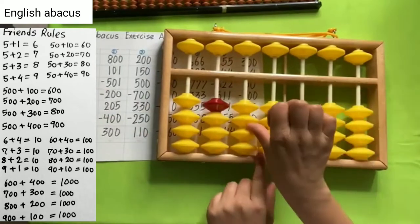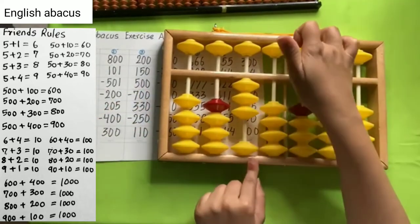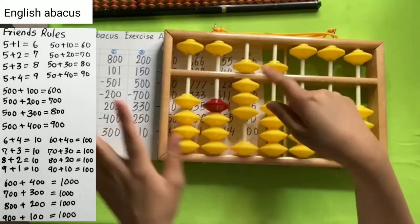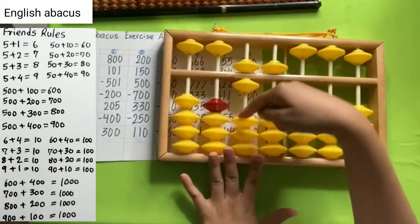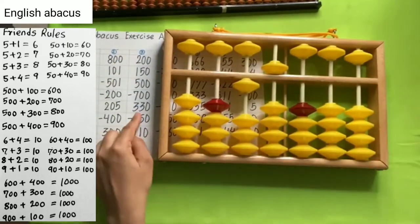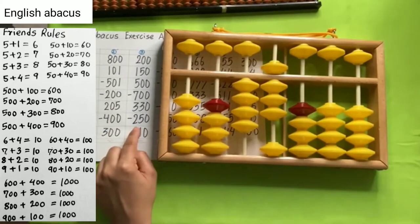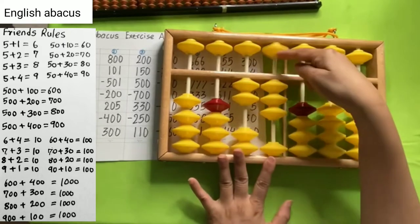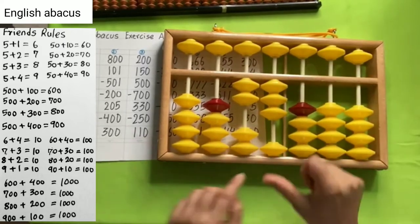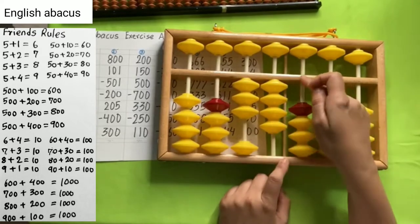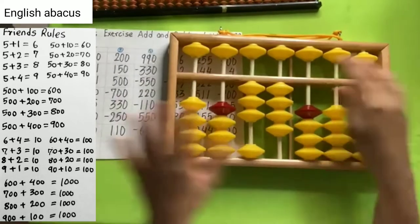Number 3. 200 and 150. Add 500. Reduce 700 means 500 and 200. So you start from this. Like this. 330. 300 and 30. Reduce 250. Add 110. 100 and 10. Your answer is 340.